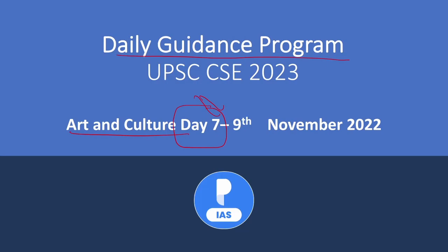Today I am giving you the targets for Day 7, which falls on 9th November. This will be the 2nd last day of art and culture. Tomorrow will be the last day, after which we will start with modern history.